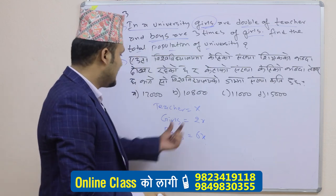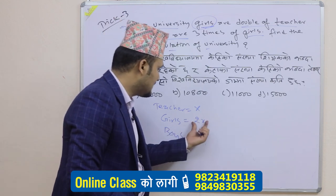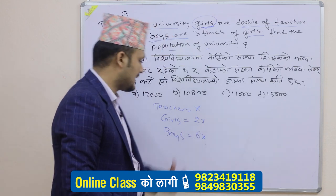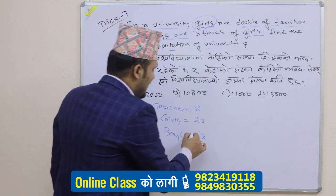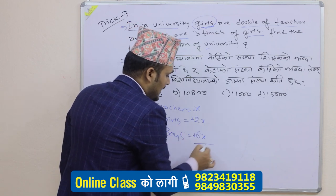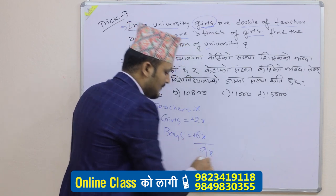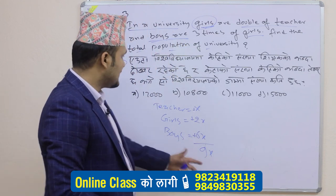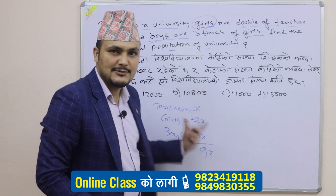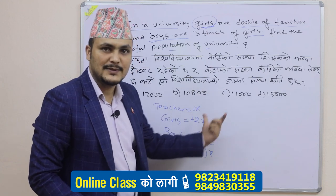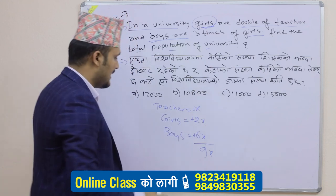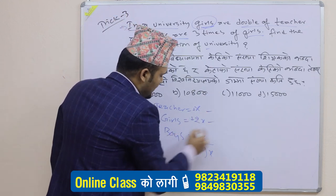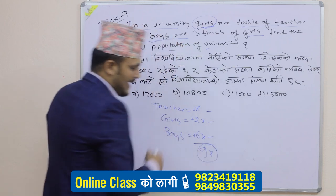If girls are two x and boys are three times the girls, boys are six x. So teacher is x, girls are two x, boys are six x. The total is x plus two x plus six x, which equals nine x. How do we find the total? Nine x.